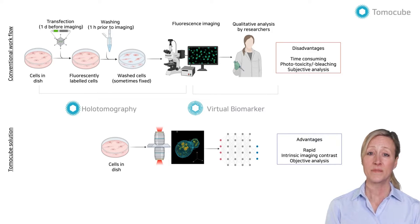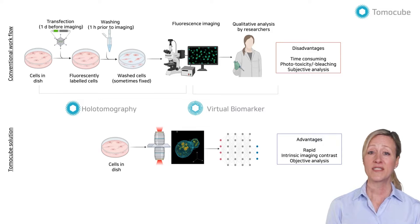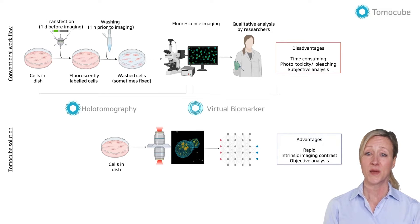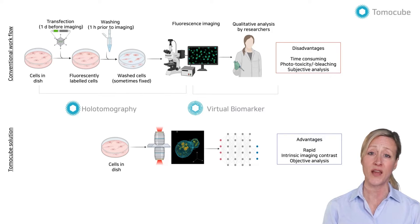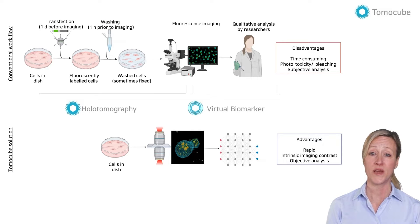Furthermore, the obtained images are qualitative. Researchers do subjective assessments by observing cellular images represented with imaging contrasts with arbitrary units. To solve these challenges, Tomacube presents unique solutions based on Holotomography HD. HD measures the 3D tomography of live unlabeled cells within a few seconds. The reconstructed tomography has quantitative information — refractive index distributions — which can be directly converted into biomolecular concentrations.